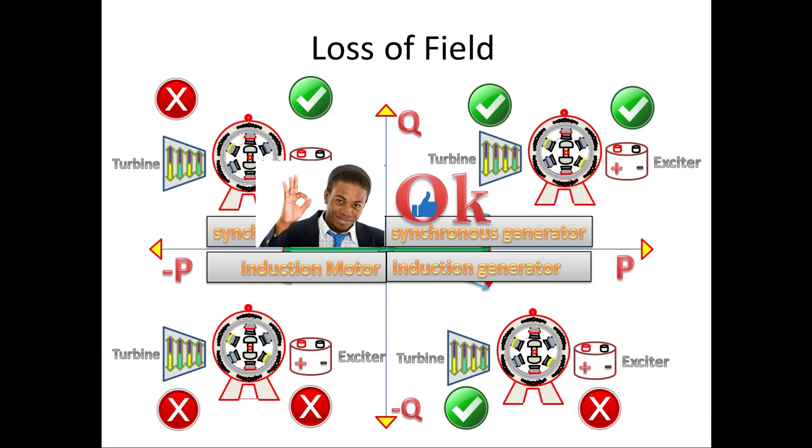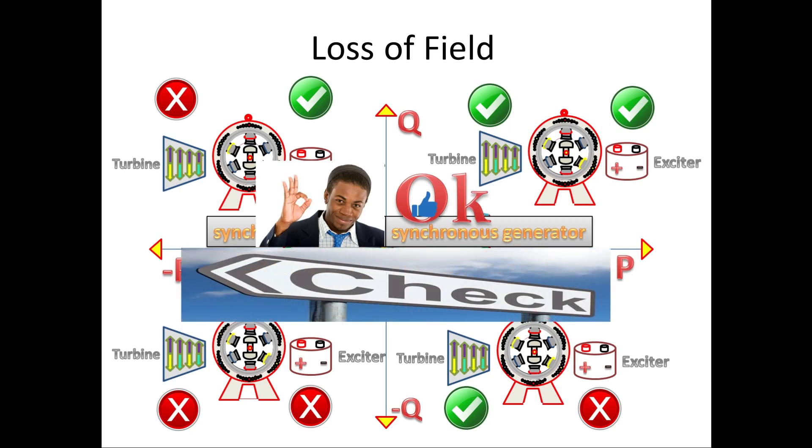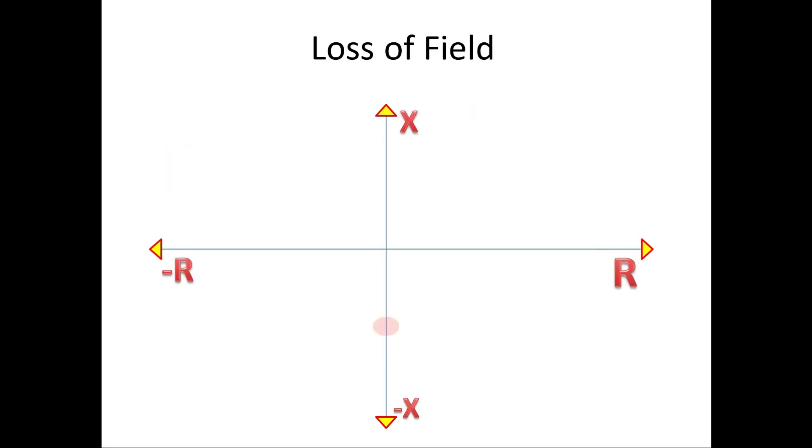So we no need to consider this quadrant. When you see the third and fourth quadrant, we can clearly see that we have exciter problem over here. So we have to check only in this region. When the generator comes under this region, the loss of field protection has to operate. So our relay setting should be in this region. From this you all may have a clear idea why we are checking on this region for loss of field.